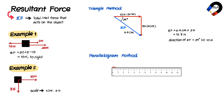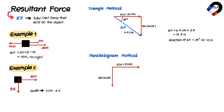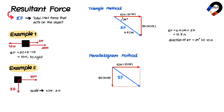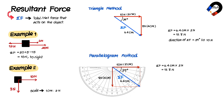To use the parallelogram method for Example 2, draw a force of 10 Newtons for 5 centimeters. Measure the angle at the tail of the 10 Newtons force using a protractor as 90 degrees, then link the tails of the 10 Newtons and 8 Newtons forces. Draw 8 Newtons for 4 centimeters and complete the parallelogram. The resultant vector is the diagonal: its magnitude is 6.4 centimeters × 2 Newtons = 12.8 Newtons, and its direction is 39 degrees to the 10 Newtons force.